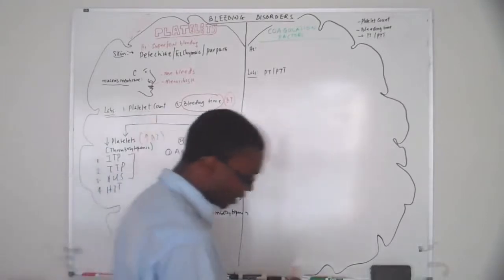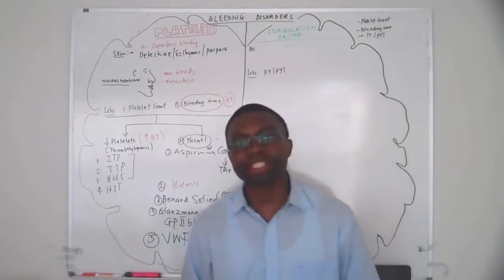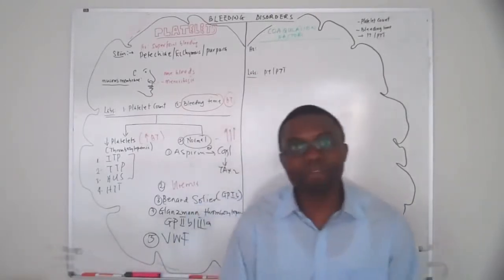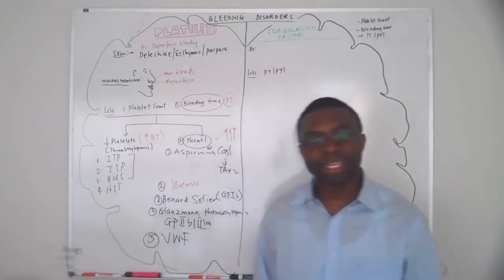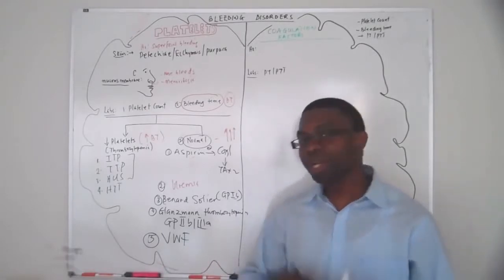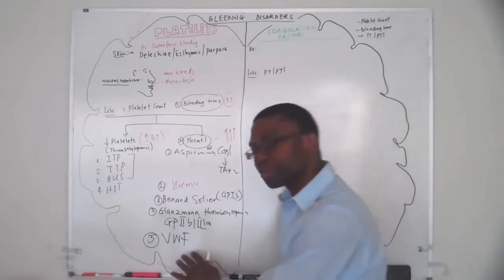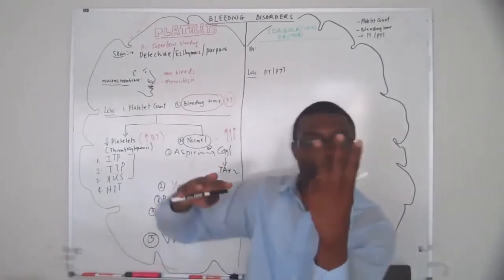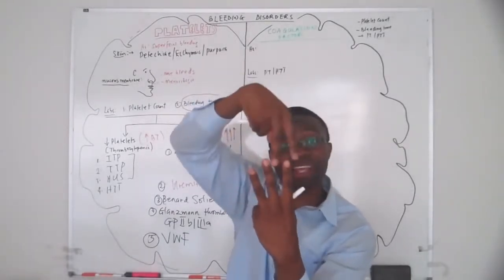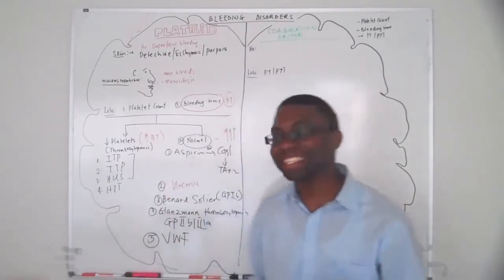Von Willebrand factor is on vacation — that's the third one. This patient will come in with mucous membrane bleeding. Classic board question: nosebleeds, petechiae, menorrhagia in a 15 or 19-year-old girl. Von Willebrand disease — and we'll talk about the pathology later. If there's no von Willebrand factor, the glycoprotein 1B has nothing to bind to, and you keep bleeding.